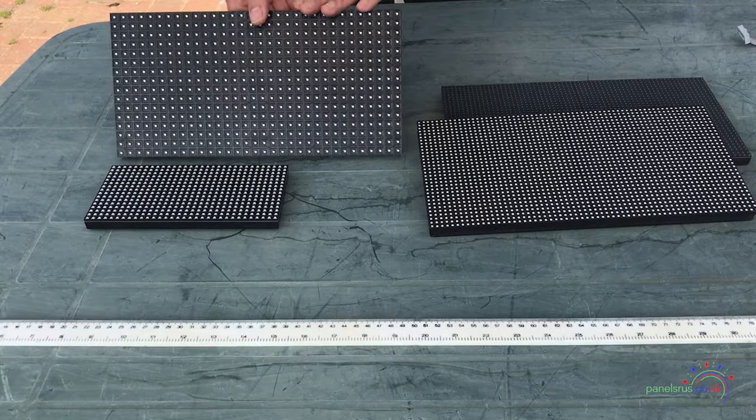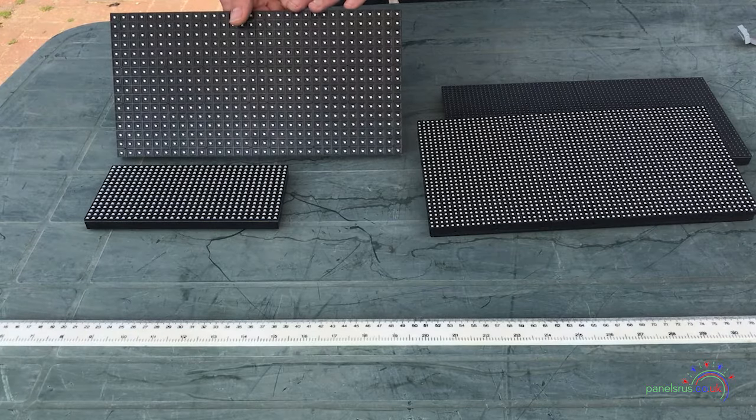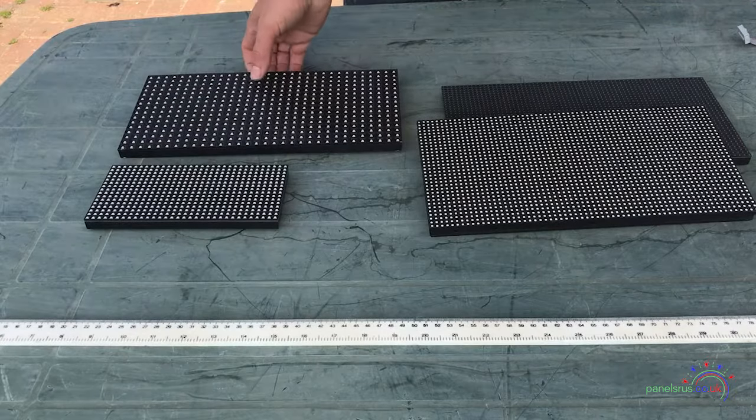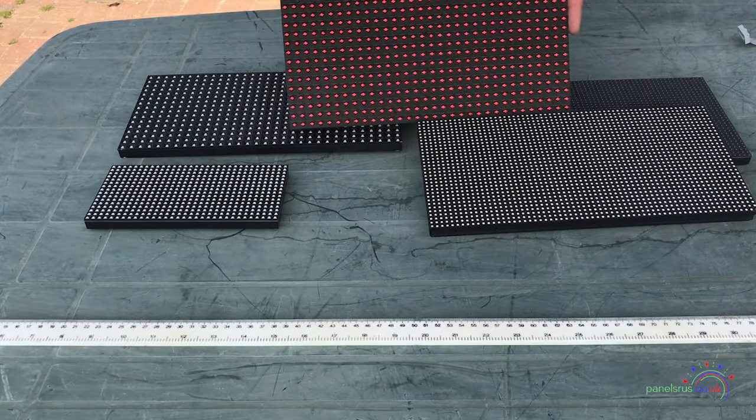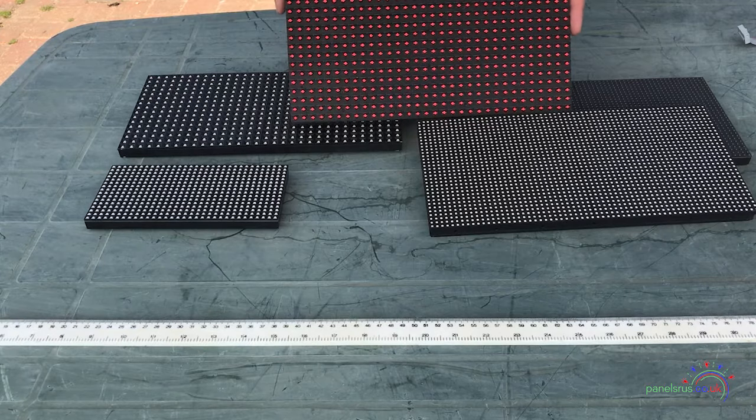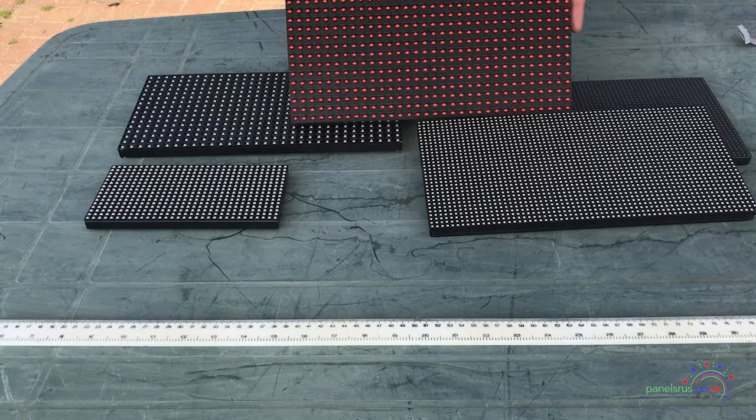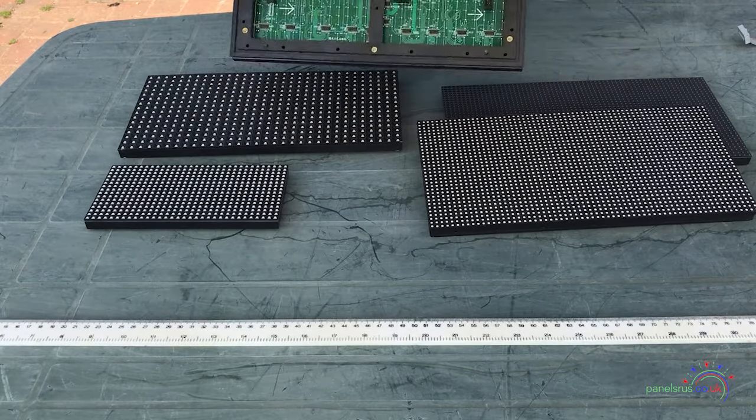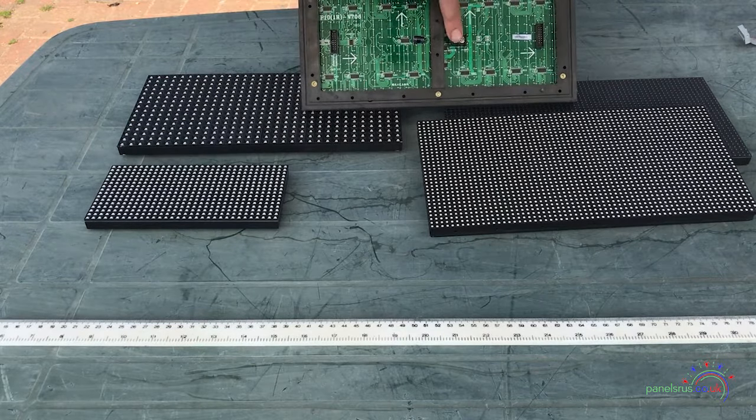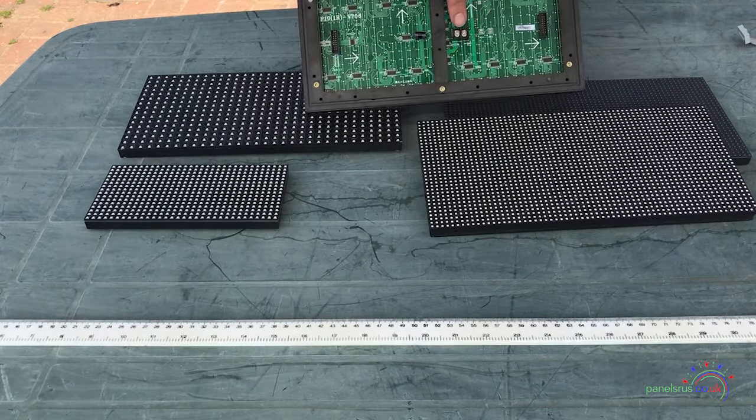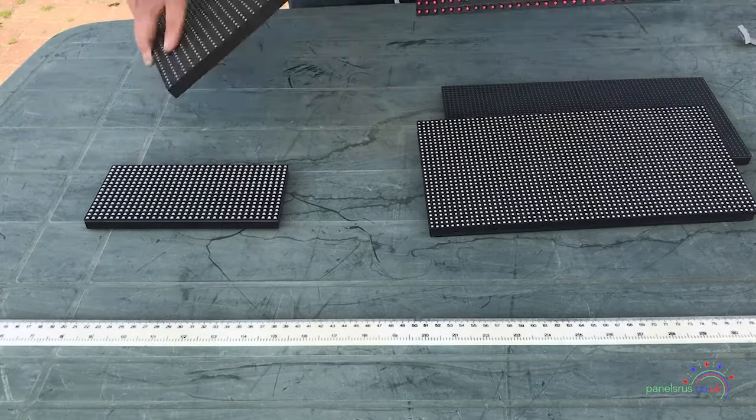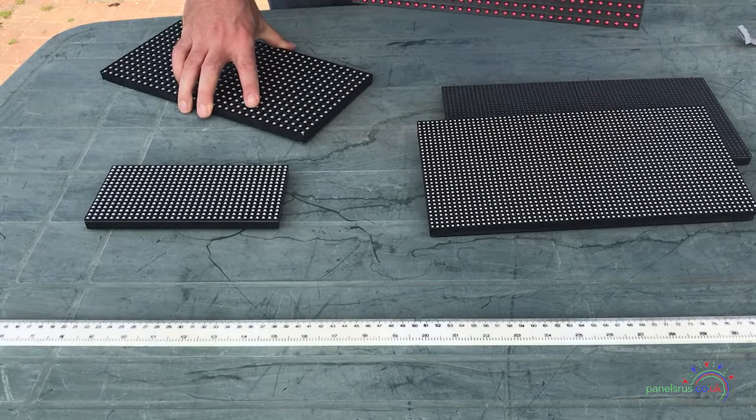As well as the RGB panels it is also possible to get panels in just a single color. This panel came again from eBay and this as you can see is an all red panel it is literally 512 red LEDs. The connectivity is very similar we've got power in this case there's a terminal connector there data in data out much the same but it is only red so you can only do red writing on that one.